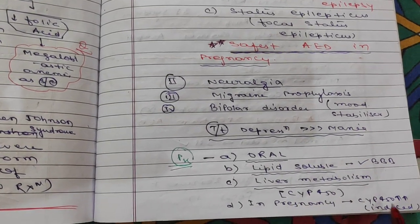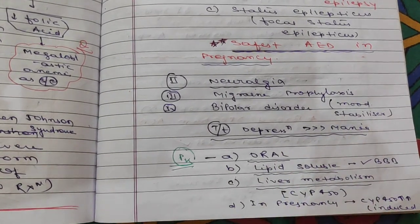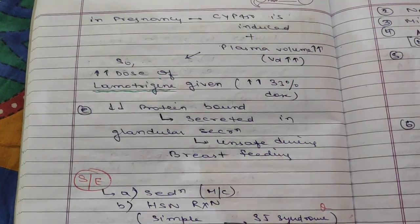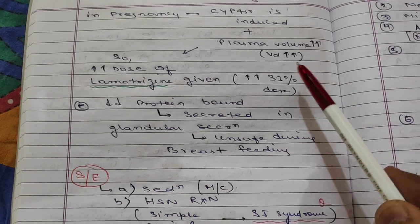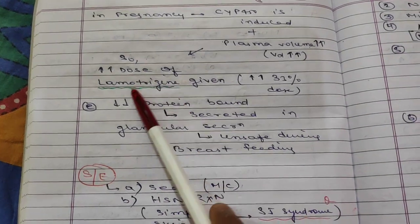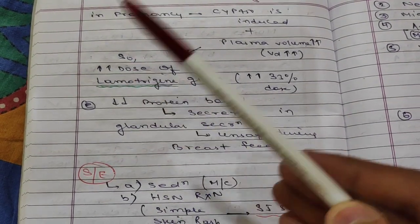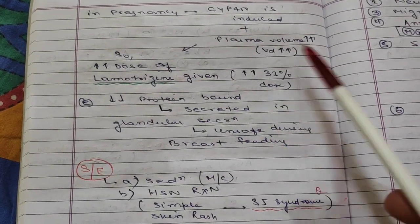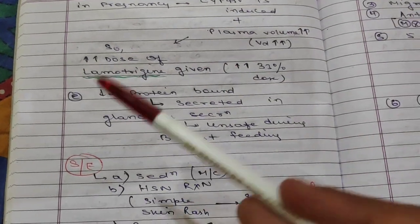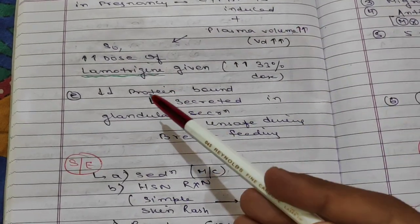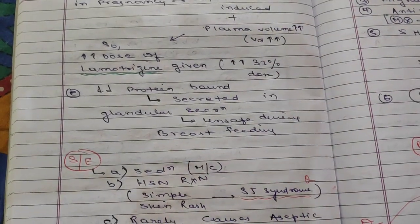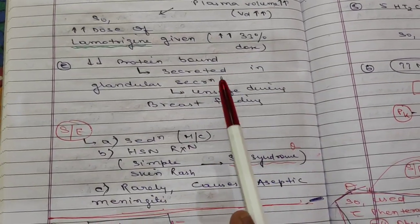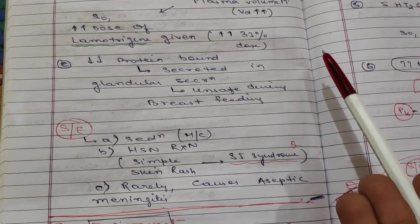In pregnancy, CYP450 is induced, so metabolism increases. Additionally, plasma volume also increases. Therefore, the dose of lamotrigine should be increased during pregnancy — by approximately 33% — because lamotrigine is the safest anti-epileptic drug in pregnancy and will be used if epilepsy is present.